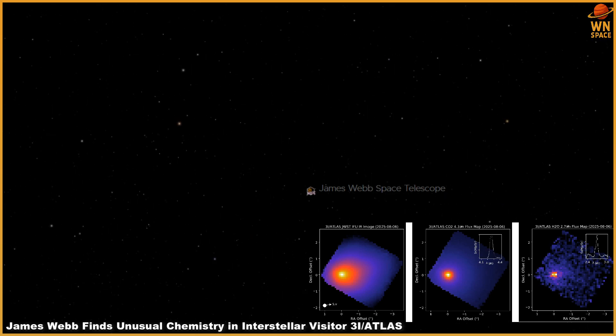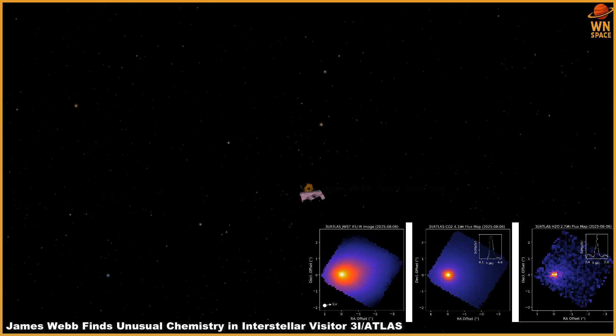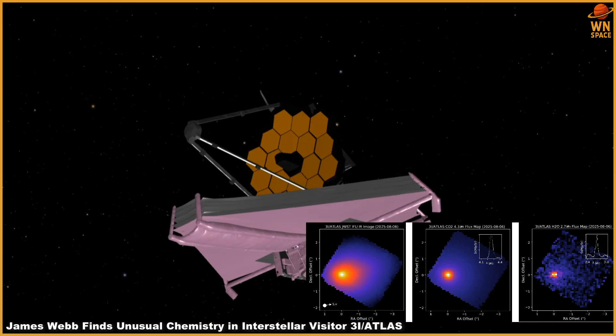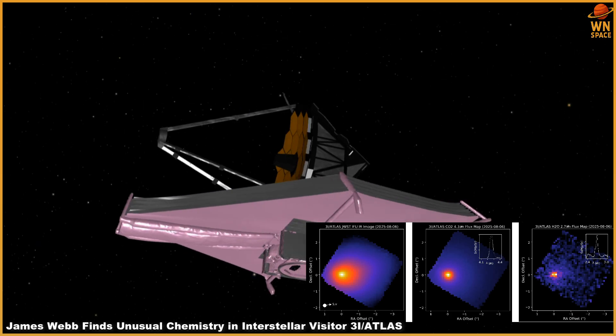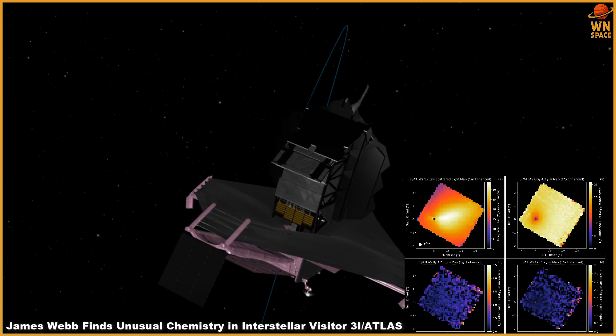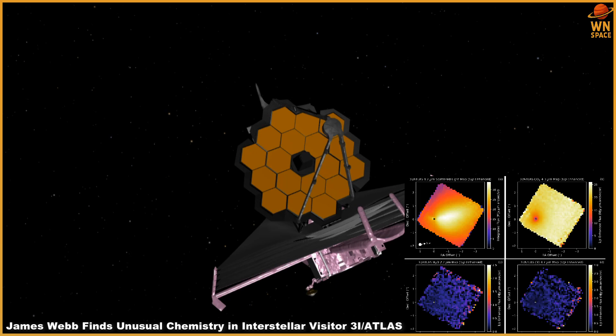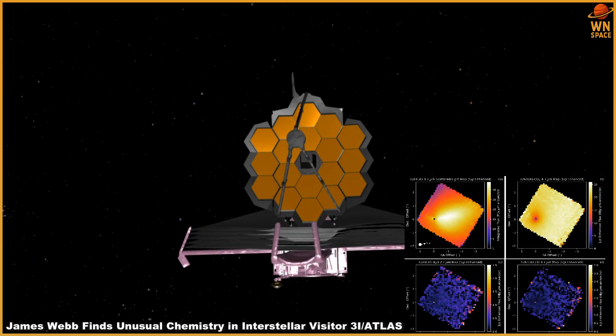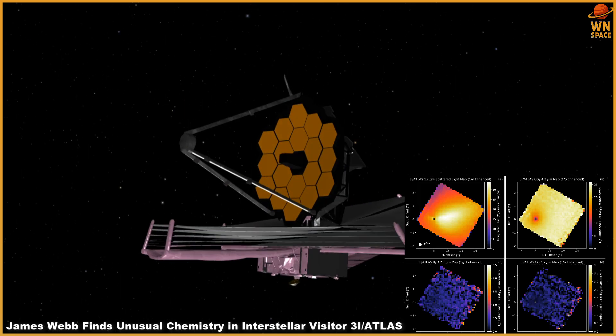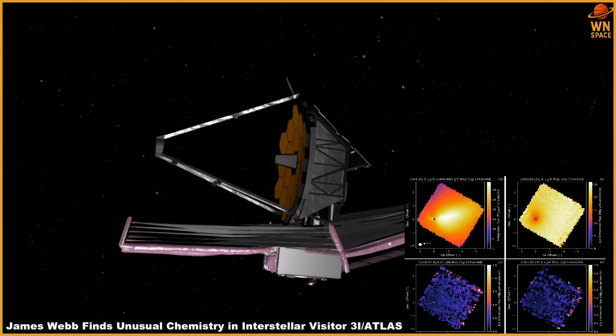Making it only the third known interstellar object ever to visit our solar system, after Oumuamua in 2017 and Borisov in 2019. Unlike the billions of comets and asteroids native to our solar system, this one comes from another star system entirely, traveling on a hyperbolic trajectory that ensures it will never return once it departs.